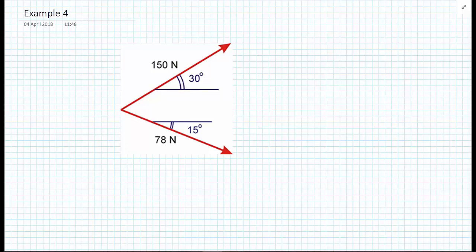In this example, we're now given two force vectors: one of 150 newtons at 30 degrees from the x-axis and one of 78 newtons, 15 degrees, but in the negative direction from the x-axis, and we wish to add these two forces together.